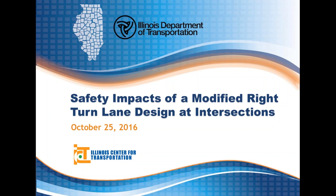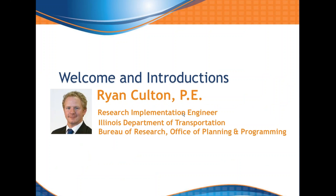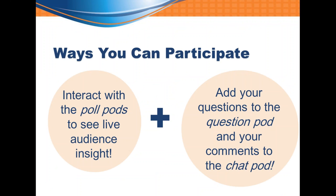When you joined today's webinar, you selected either phone or computer audio. If for any reason you would like to change your selection, you can do so by accessing your audio pane in the upper right-hand corner. There are two ways to participate. You will have the opportunity to participate in seven polls throughout the webinar. Please make your selection promptly, and we will publish the results for you to see. You will also have the opportunity to submit questions by typing into the questions pane of the control panel. You may type in your questions at any time, and we will address all of them during the Q&A session at the end.